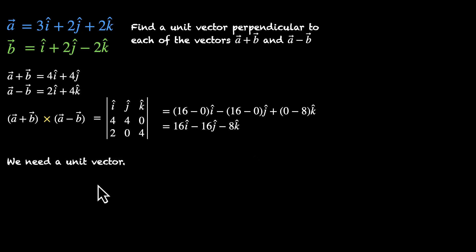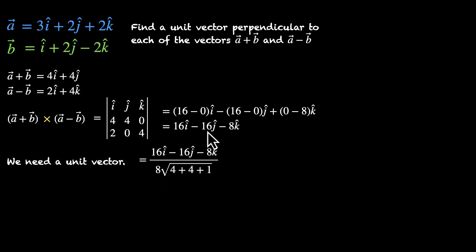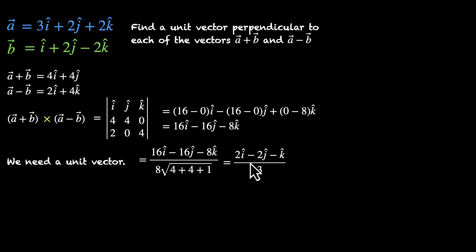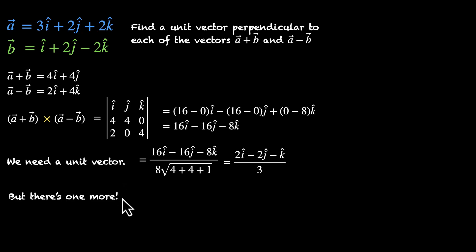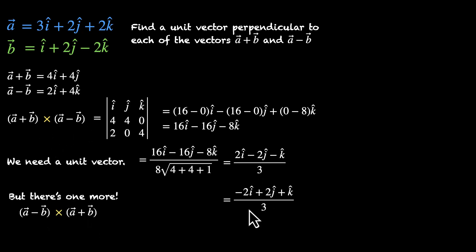This is not a unit vector, so we divide by its magnitude. Taking out the factor of 8, the magnitude is 8 times the square root of 2² plus 2² plus 1, which is the square root of 9, equal to 3. So 8 times 3 is 24. Cancelling, we get 2i-cap minus 2j-cap minus k-cap divided by 3. Again there's a second solution — the exact opposite: minus 2i-cap plus 2j-cap plus k-cap divided by 3.